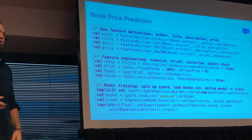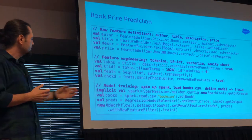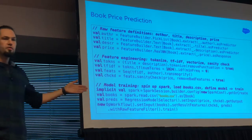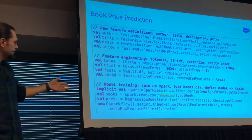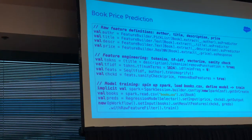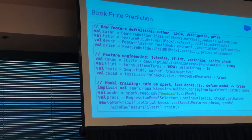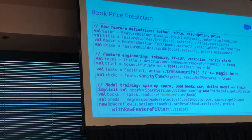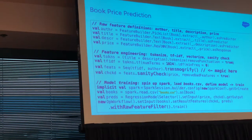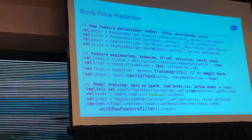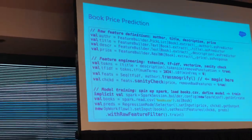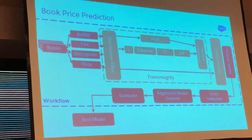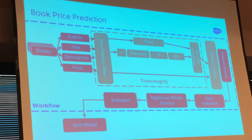Then I do a sanity check on my features to see if they have good predictive power. Then I train the model — I spin up a Spark context, read my book CSV file as my training set, and train the model. The book price prediction pipeline can be seen as this from an execution point of view when it runs on Spark.